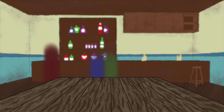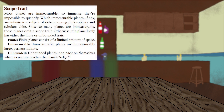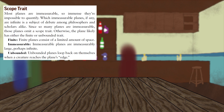The planes are broadly described with a variety of traits. These come in five major categories. Scope traits describe the size of a plane. Most are immeasurable — either infinite or close enough to infinite to make the distinction meaningless. If a plane doesn't have a scope trait, you should always assume it is immeasurable.